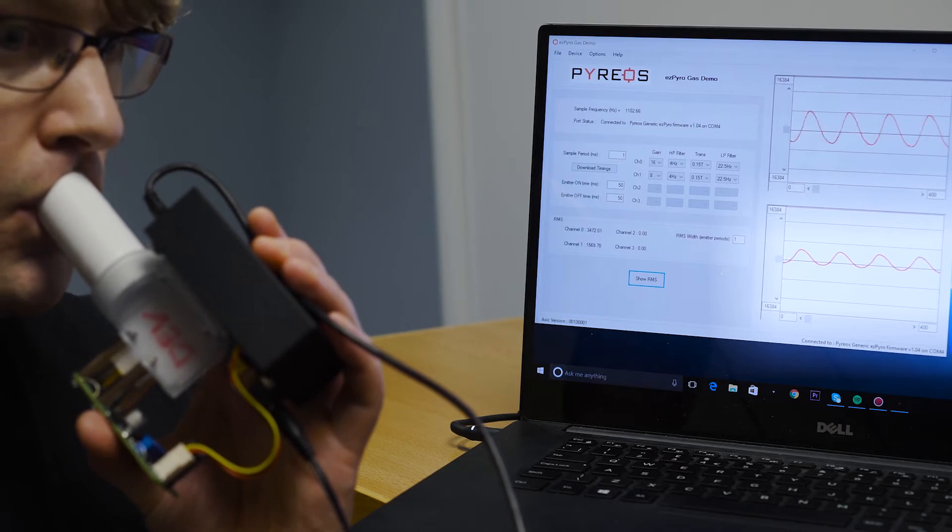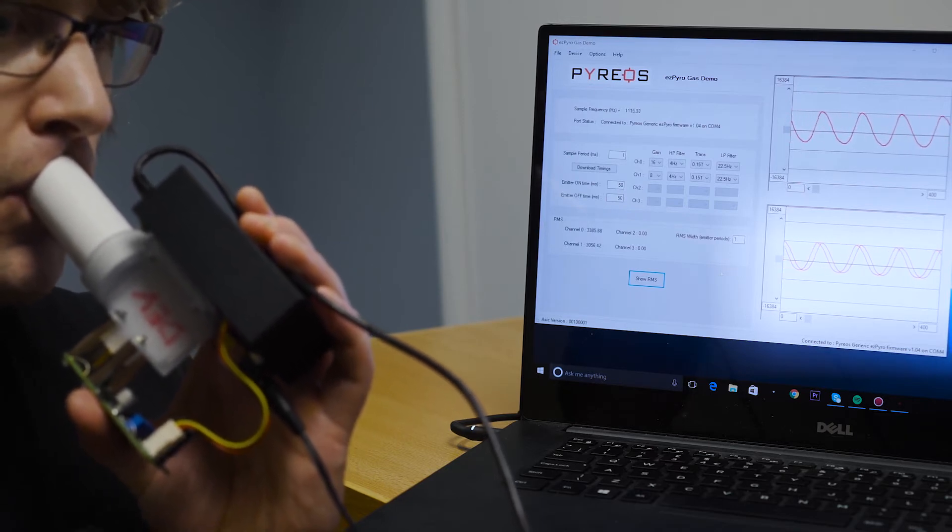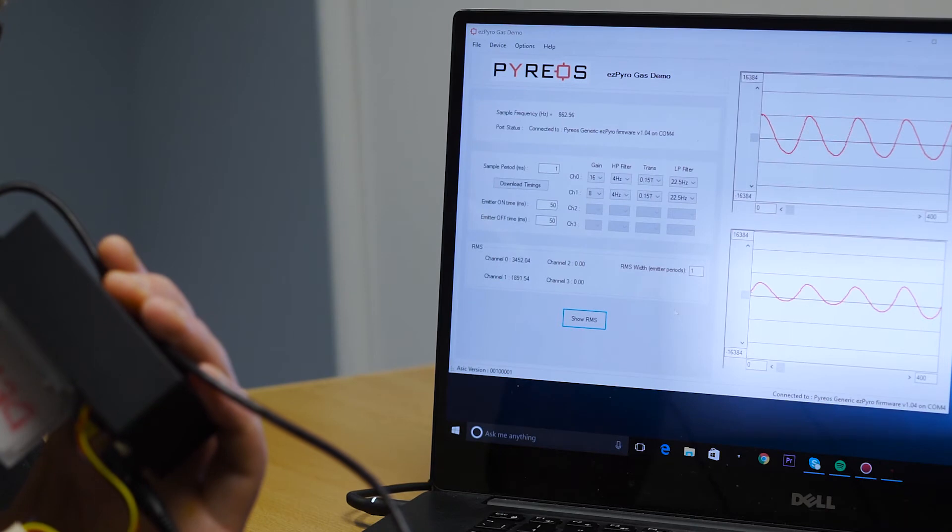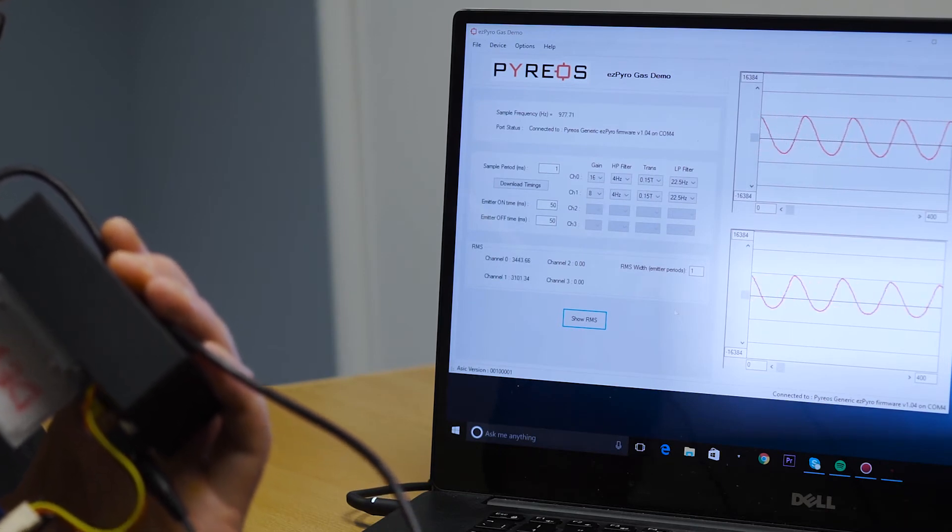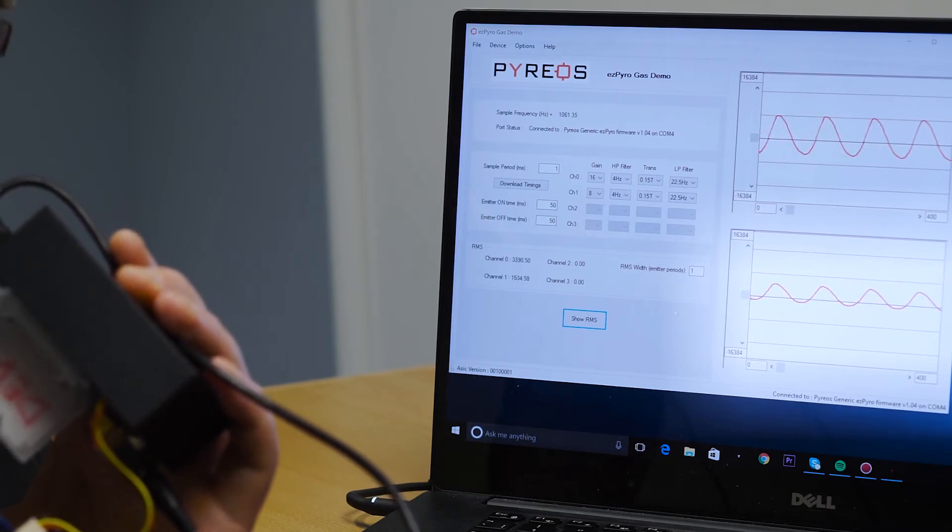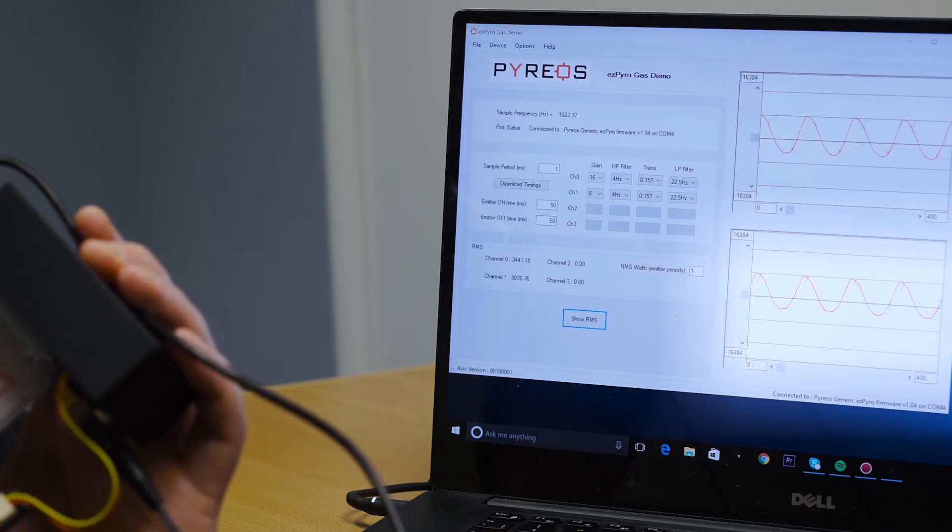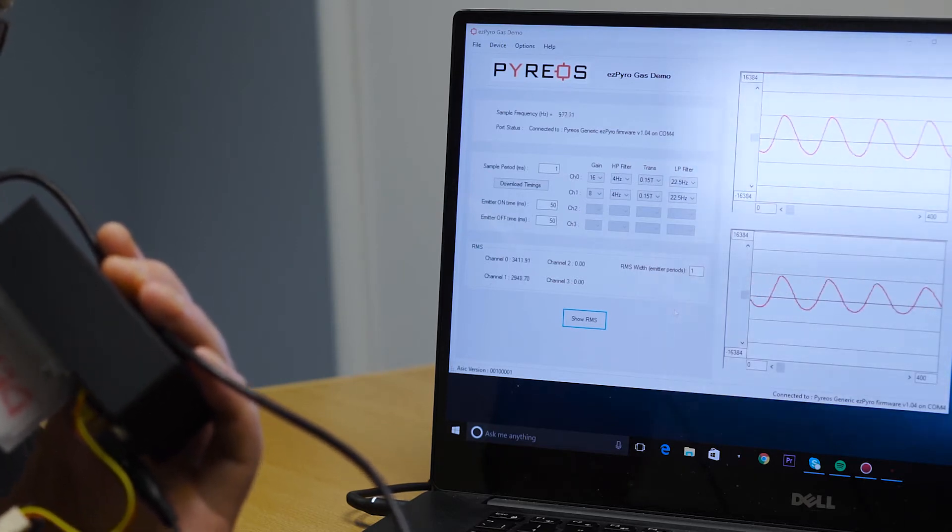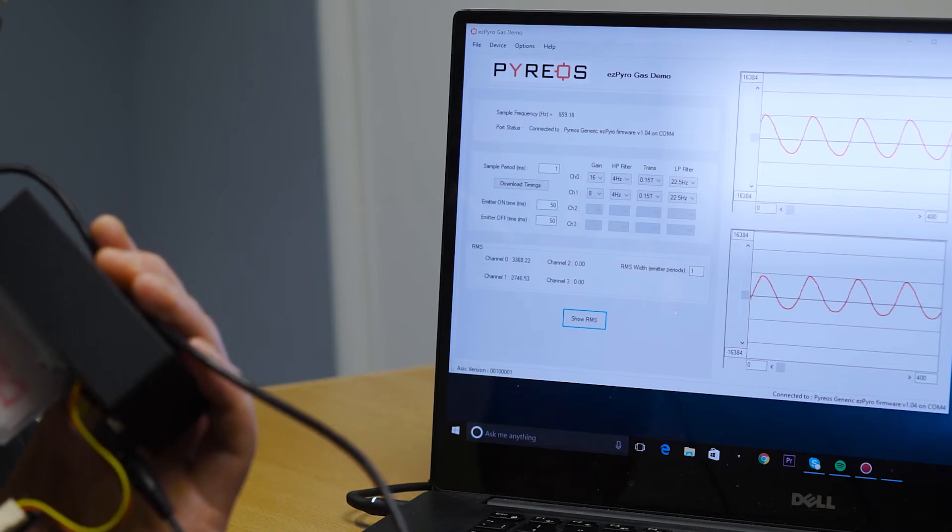When you exhale into the tube, you introduce greater than ambient CO2 concentration. The gas absorbs some of the infrared radiation emitted by the source, resulting in a drop in signal level on the CO2 sensor channel. At the same time, the reference channel signal remains unchanged due to this gas.